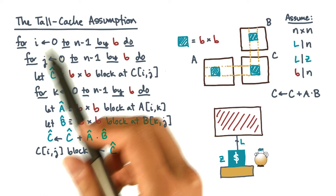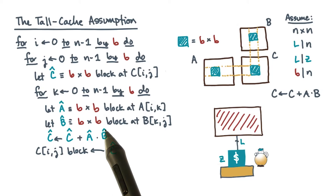Now to make this algorithm cache efficient, you would just choose b so that these three b by b blocks fit in cache. In other words, b ought to be proportional to the square root of z.